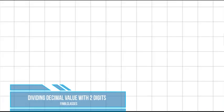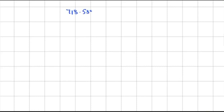Suppose we have a dividend with three decimal places and a divisor with a two-digit number. In this case, we have the example 718.589 divided by 23. The dividend has four decimal places — 0.589. We will follow the same steps as in previous lectures. The divisor has two digits.